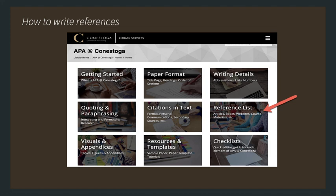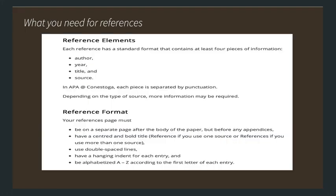On the APA at Conestoga site, there is a box for the Reference List. When you click on that box, you will see the referencing information, which is far more exact and contains a lot more information, because this is what your readers will use to find the original sources. You have the author, the year, the title, and the source — where you got the information from. The references must be on a separate page after the body of your paper.